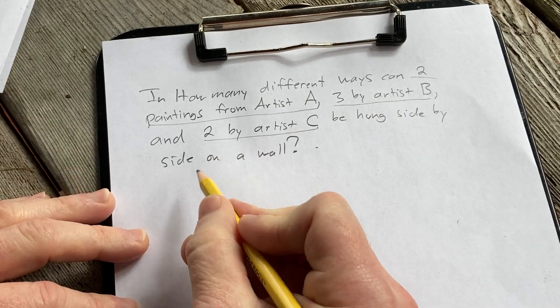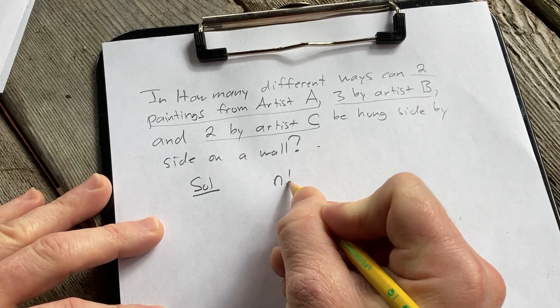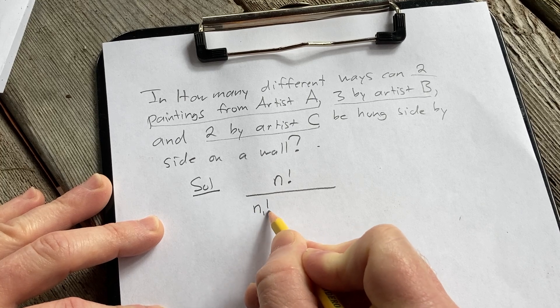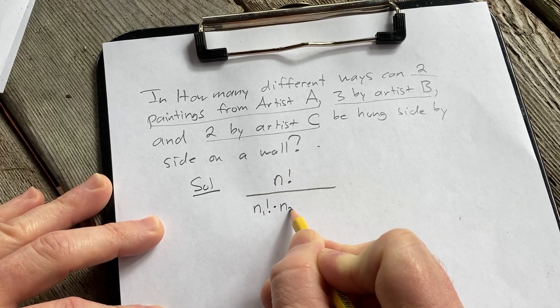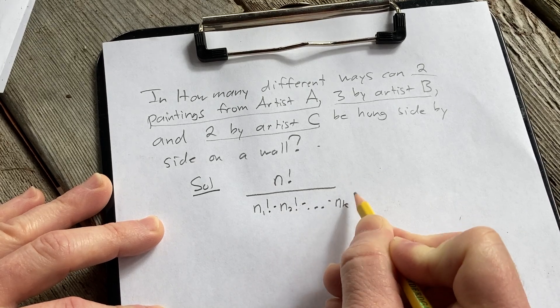So there is a formula. Let me show you the solution. The formula is the following: it's n factorial over, then here we have n sub 1 factorial times n sub 2 factorial times dot dot dot times n sub k factorial.